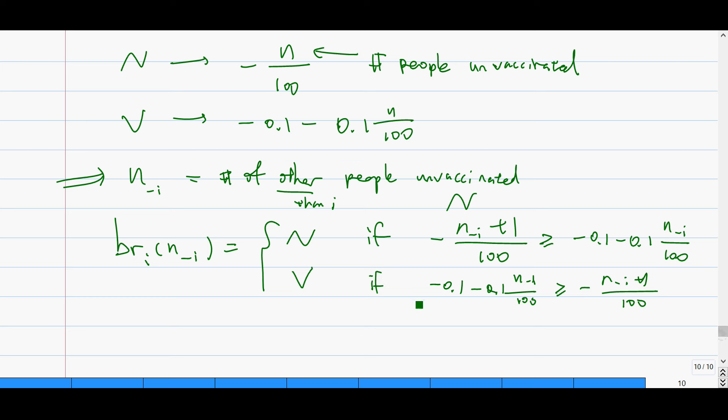But anyways, in class, I solved this. I'm not going to solve this again. But when you rearrange this, you get when N minus i is large. So the logical thing to think about is when there are a lot of people who are unvaccinated, then it's very likely to get sick. So maybe I should get vaccinated. So when N is large, that's why you don't have the smallest sign. So when N is small, so when everyone is vaccinated,